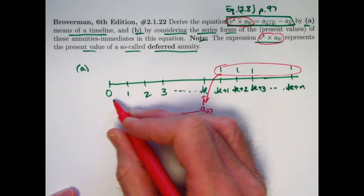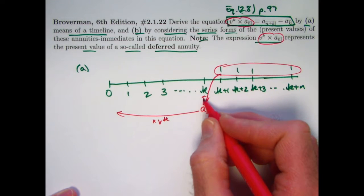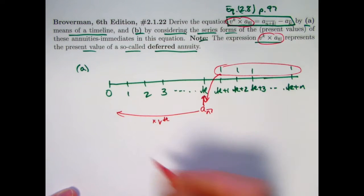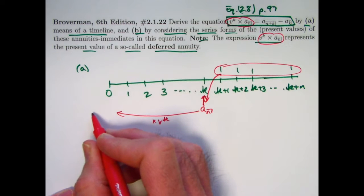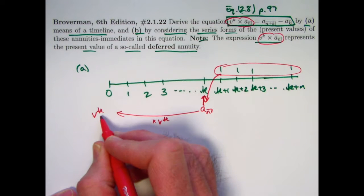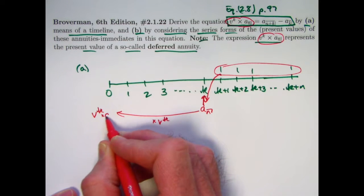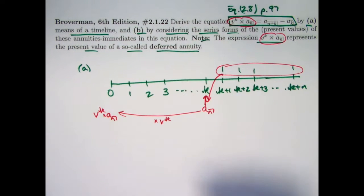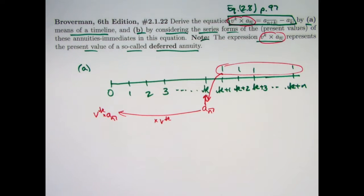There are K years in between time zero and time K when we are initially evaluating the value of this income stream, giving me, again, the simplest expression, V to the K times A_N for the present value at time zero of this deferred annuity.